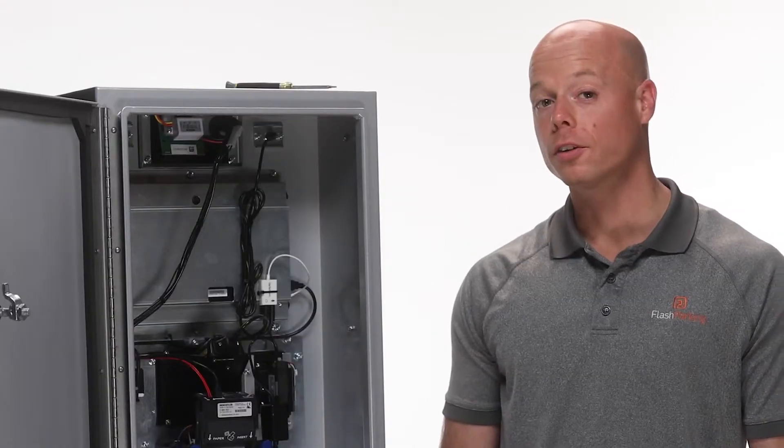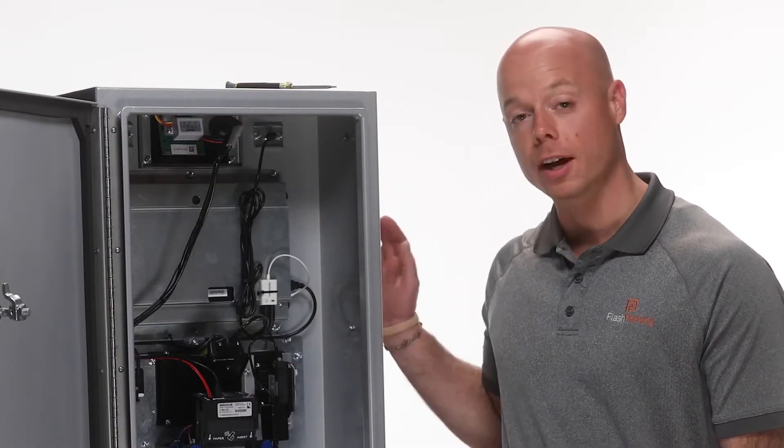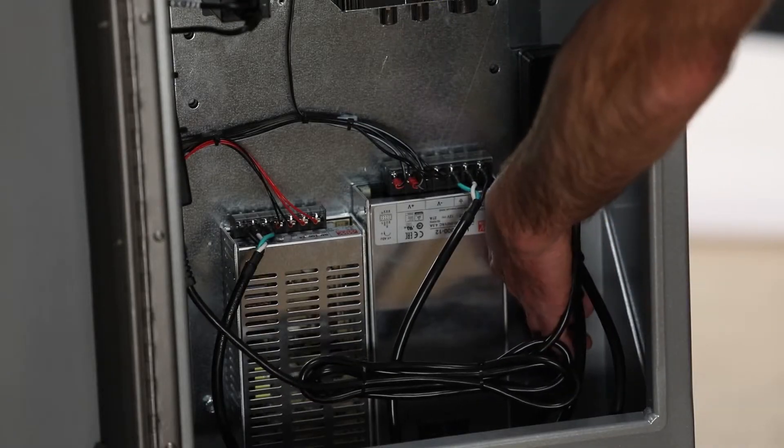Now we'll go over how to replace the USB hub. The first step in replacing any component in the Flashpark smart station is to turn off the kiosk.